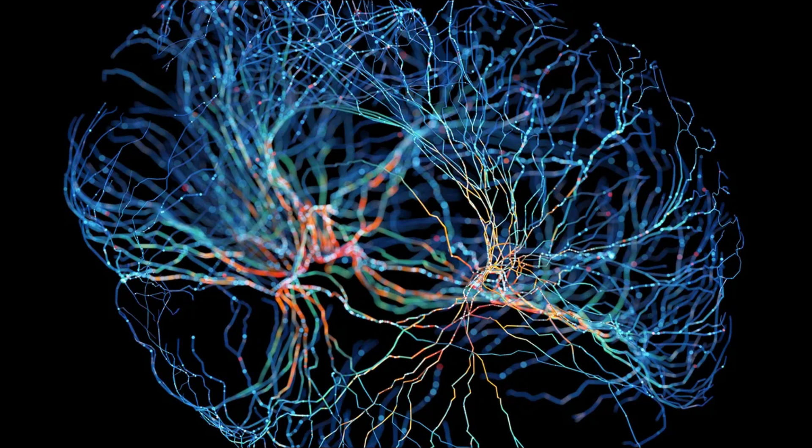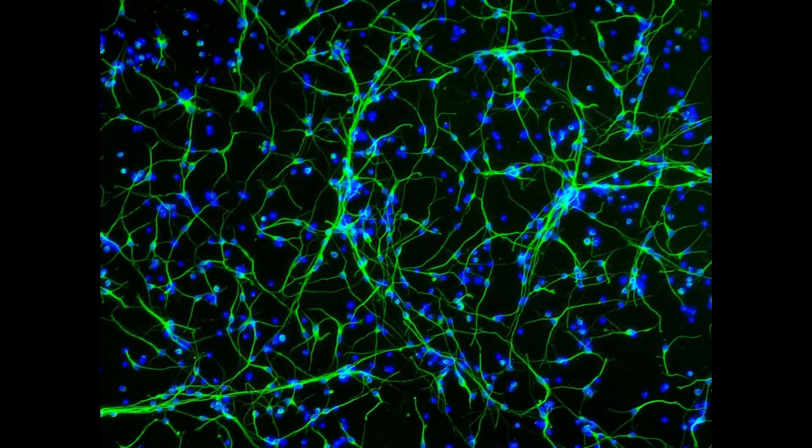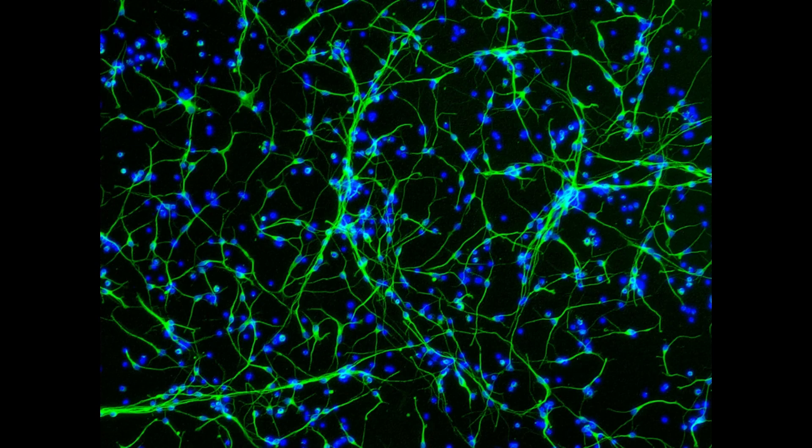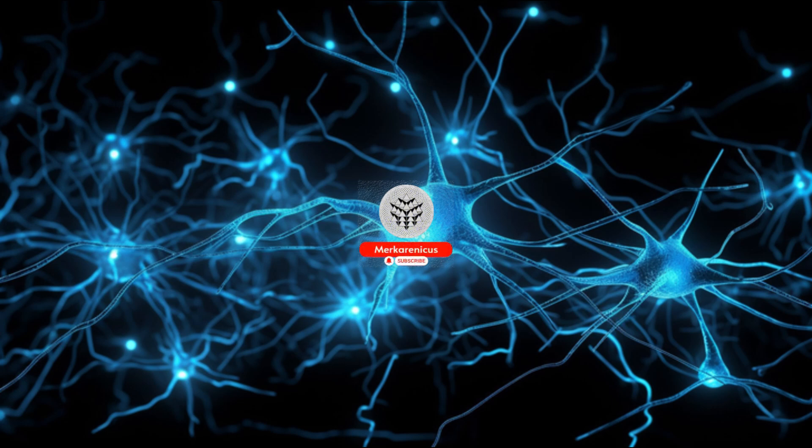Led by Don Hee Ham, John A. and Elizabeth S. Armstrong Professor of Engineering at Harvard's School of Engineering and Applied Sciences, the team engineered a silicon chip etched with 4,096 micro-hole electrodes, each a gateway into neuronal interiors.